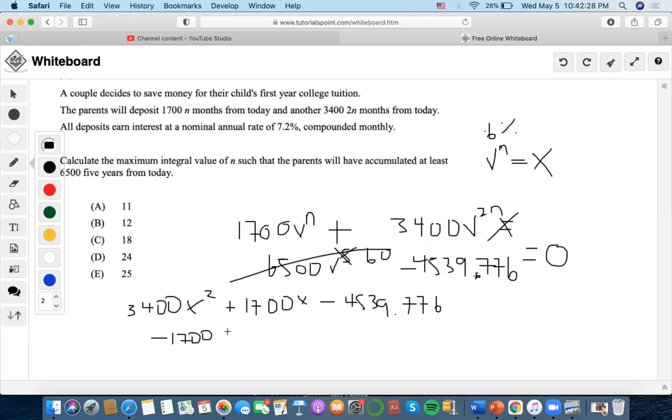Plus or minus radical B squared, which is 1700 squared, minus 4AC.